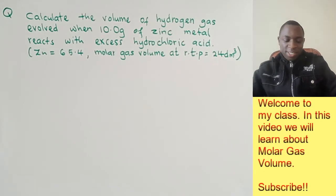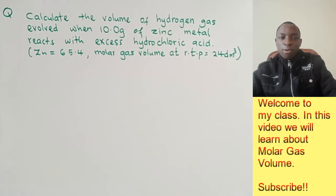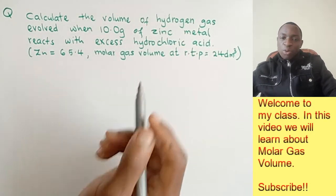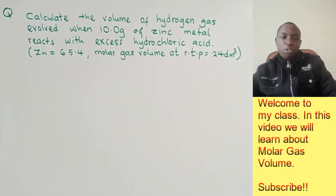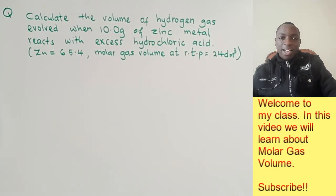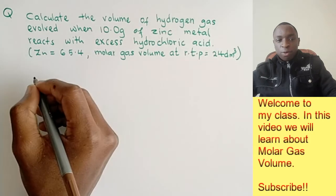The first question says: calculate the volume of hydrogen gas evolved when 10 grams of zinc metal reacts with excess hydrochloric acid. The values given in the bracket are the molar mass of zinc and the molar gas volume. For this question, the first thing you should do is write the chemical equation.